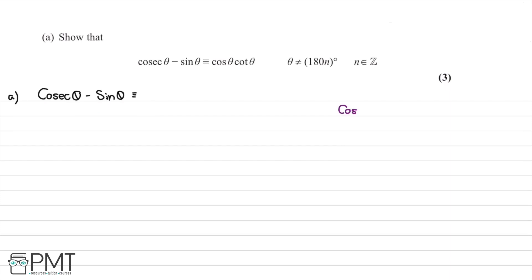We know that cosec of theta is equal to one over sine theta. That is our first trig identity, which is going to be useful here. So we can rewrite this as one divided by sine theta minus sine theta.